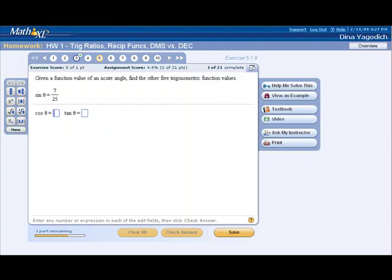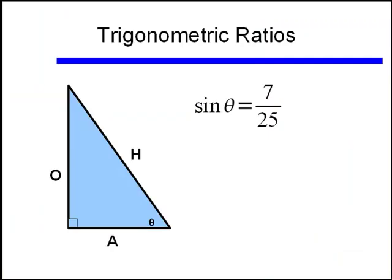Well in order to do this type of problem, we need to go back and build a right triangle from this trig function. Well if we know that sine of theta is 7 over 25, and we recall that the sine of an angle is equal to the opposite side over the hypotenuse.